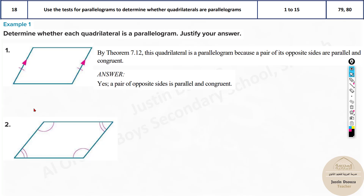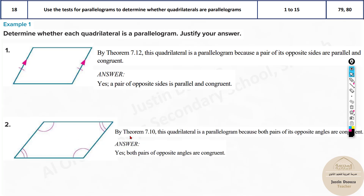This is also a parallelogram because the opposite angles are congruent. So by theorem 7.10, the quadrilateral is a parallelogram because both pairs of opposite angles are congruent. When you're writing the answer, you must write: yes, it is a parallelogram because both pairs of opposite angles are congruent. You must state what is happening — you don't need to mention the theorem number, but this theorem says exactly that.